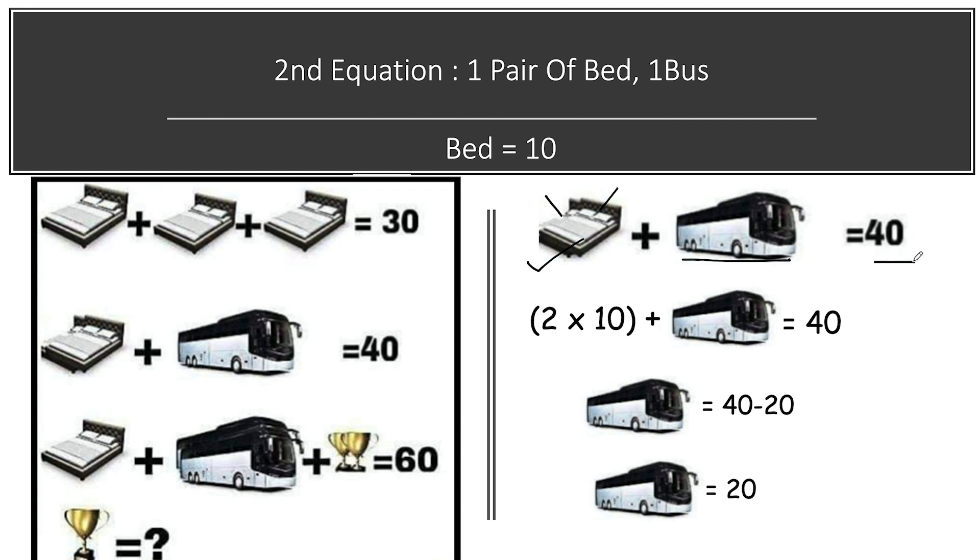We know the value of one bed, that is equal to 10, so two beds value will be 2 times 10, that is equal to 20. And one bus is present, total value is equal to 40. We move this 20 to the right side it will become negative, so 40 minus 20 will be 20. So bus value will be 20.